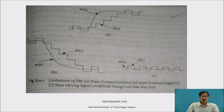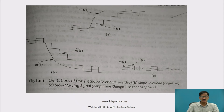In delta modulation, there exist two types of noise. One is called slope overload, which may be positive or negative. Diagram A shows positive overload and diagram B shows negative overload distortion. In diagram A, the analog input is increasing rapidly in the positive direction, whereas in diagram B, the analog input is decreasing rapidly. In both cases, the staircase predicted output M-cap(T) is not following the analog signal — there is a deviation. This kind of distortion is called slope overload distortion.